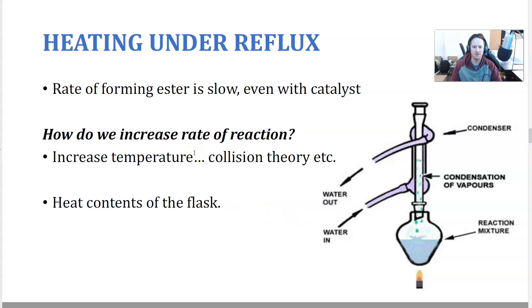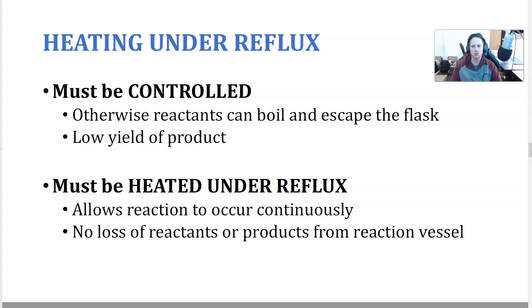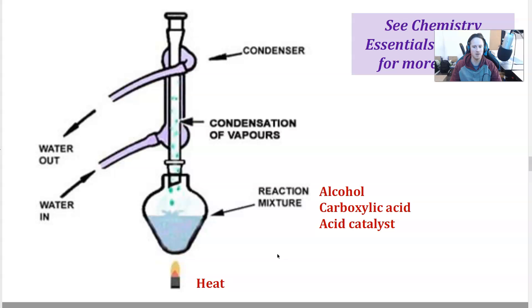You want to have gentle boiling and some vapor is going to come up and hit that condenser and then it's going to go back down. How do we increase the rate of reaction? We increase the temperature, so that's why we do this. But we don't want to lose any product, which is why the reflux is utilized. Reflux needs to be controlled. Otherwise, the reactants can boil and escape if the boiling is too vigorous and you can get low yield of product. Reflux allows the reaction to occur continuously, and there's no loss of reactants or products from the reaction vessel, which is important because we don't want to lose our product, which lowers yield.